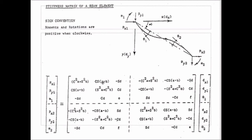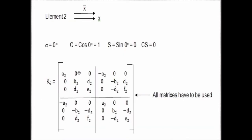With C = 1 and S = 0 substituted: the first entry becomes A, then 0, then 0, and so on throughout the matrix. We substitute for the whole part of the matrix and find a matrix like this. This is element 2, so I'm going to name it as 2. At the end we need to combine them together, so for convenience I'm labeling it element 2.